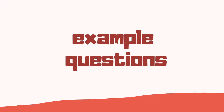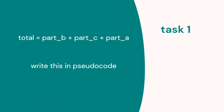We've included some example questions, so as you watch this video see if you can answer these. Task one: we've got this code with total equals part B, part C, part A — how would you write this in pseudocode?